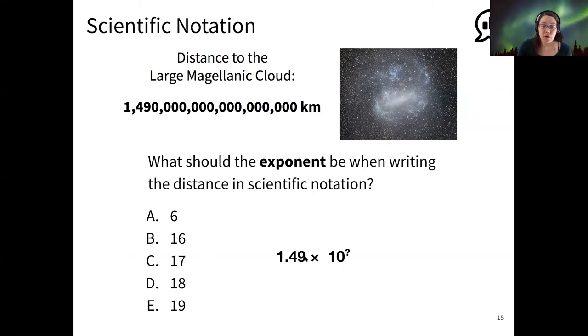Alright, so now we know our coefficient is 1.49. So now what should the exponent be? And remember, you can use the trick of counting in groups of threes to get the number of digits.